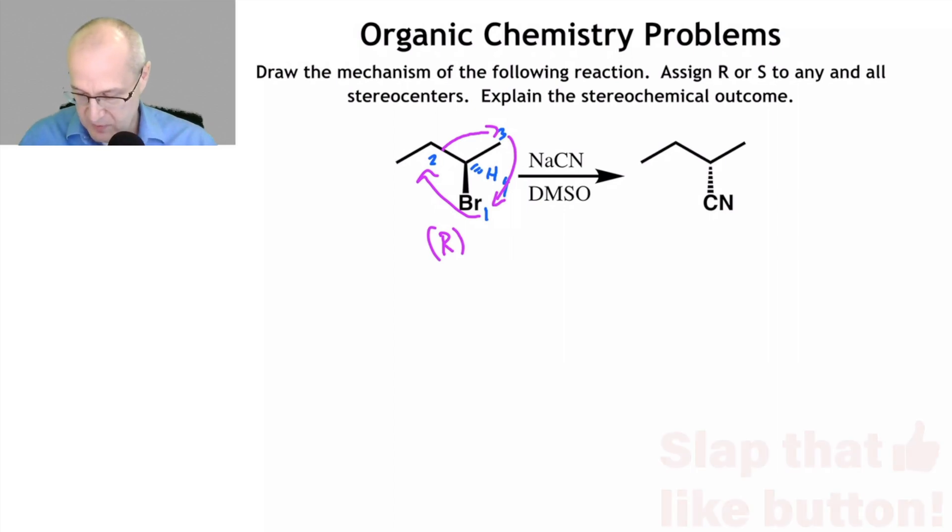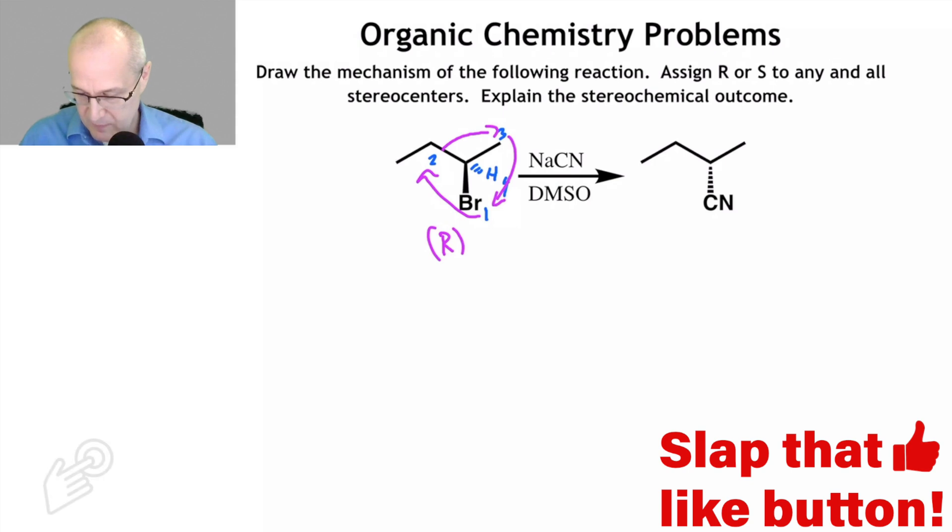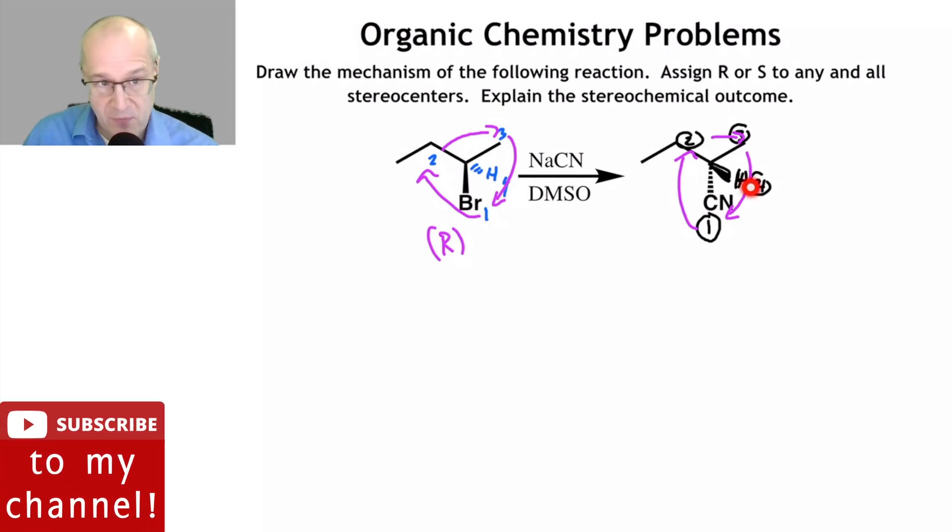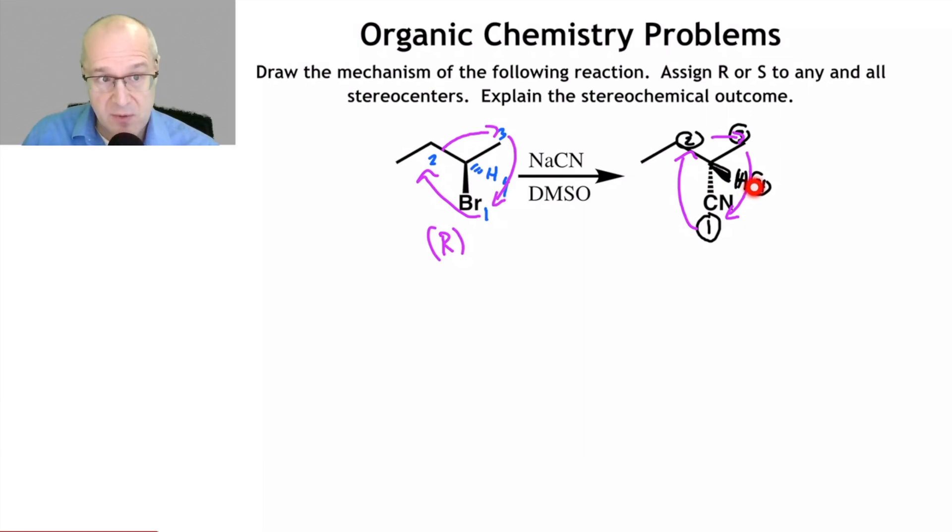Let's look over here. So this is going to be one, two, three, and the hydrogen coming up is four. That's a hydrogen. Call that four. So now it's going to be one to two, two to three, and then back to one. Now it appears to be R. But remember, the low priority group can't be in the front. It has to be in the back. So this is actually S. This is S stereochemistry.